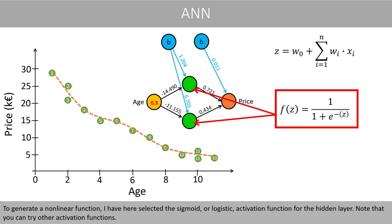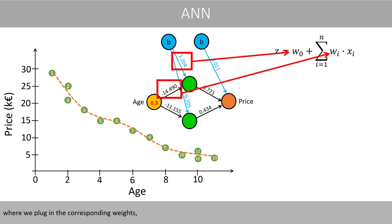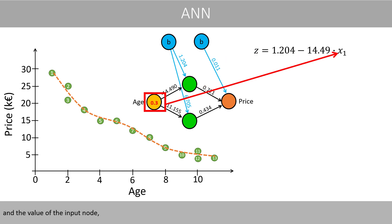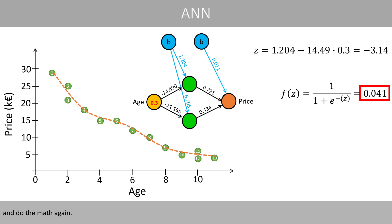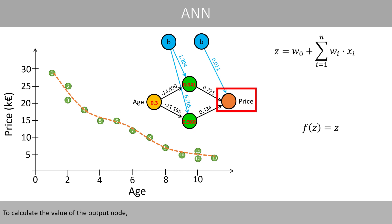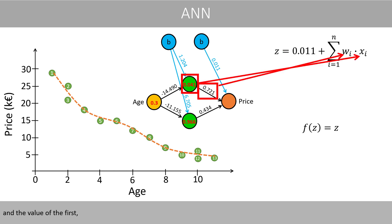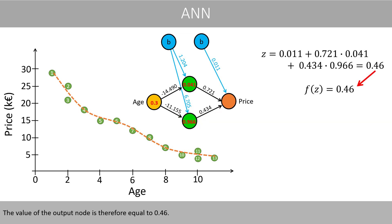To generate a nonlinear function, I have selected the sigmoid or logistic activation function for the hidden layer. Note that you can try other activation functions. When the output is on a continuous scale, one usually selects the identity activation function for the output node. Let's calculate the value of the hidden nodes, where we plug in the corresponding weights and the value of the input node and do the math. We then plug in this value in the logistic activation function. The value of the first hidden node is 0.041, whereas the value of the second hidden node is 0.966. To calculate the value of the output node, we plug in the bias weight and the values of the first and second hidden node. The value of the output node is therefore equal to 0.46.